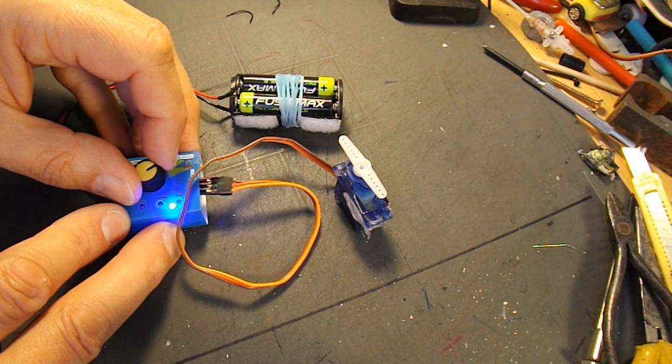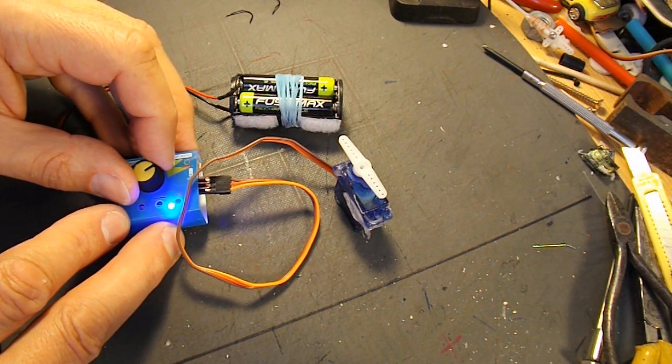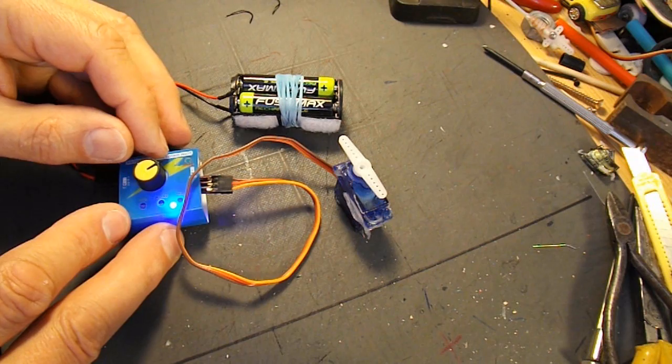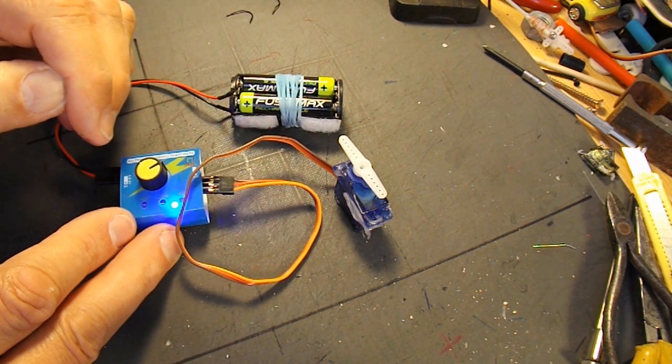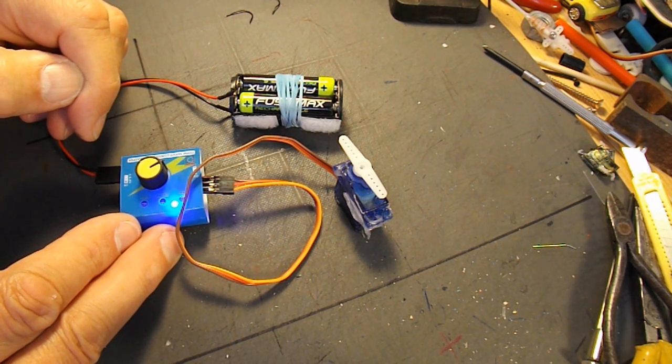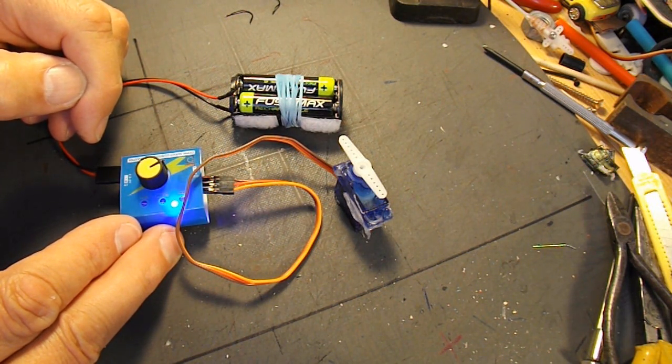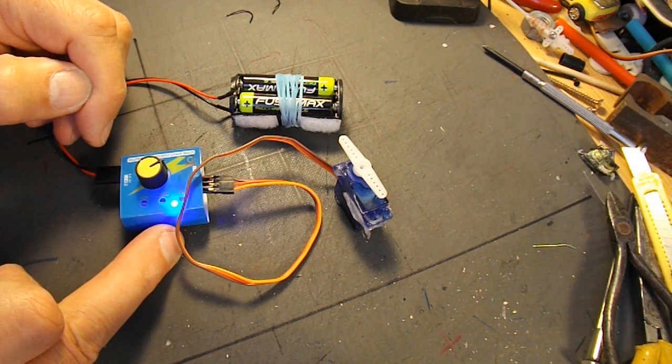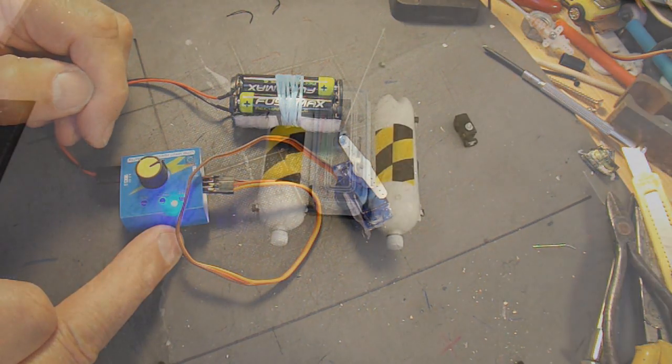How to convert your servo to continuous rotation or 360 degree rotation. Just add two 2.2k resistors to replace the potentiometer and cut out a little peg that stops the gear going all the way around. There's plenty of videos on YouTube on how to do it. The only reason I've done one of my own is I actually need it for this boat that I'm building.